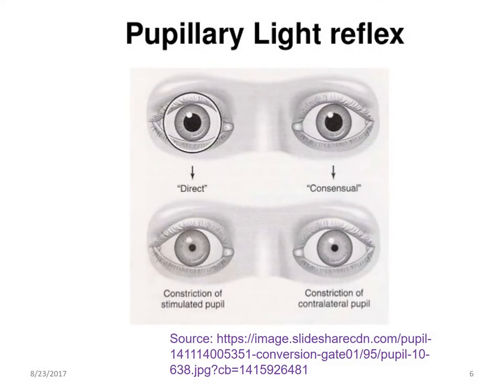This picture explains the pupillary light reflex. On the left side, you find the direct light reflex. On the right side, you find the consensual light reflex. The upper part of the diagram shows the pupils are dilated due to less light.